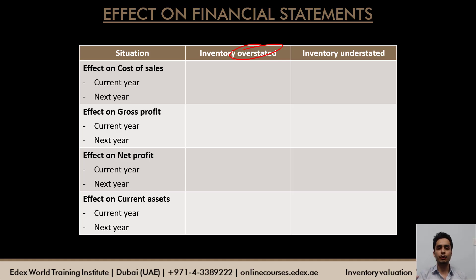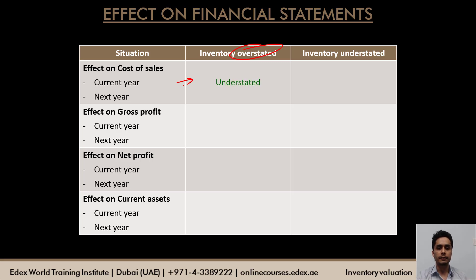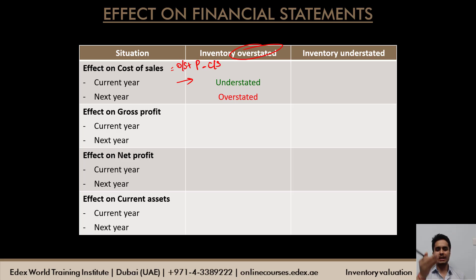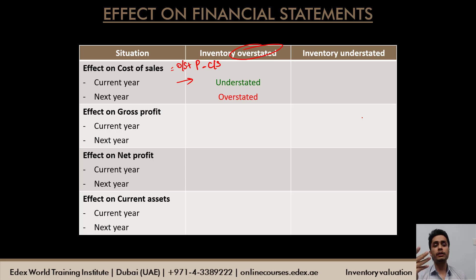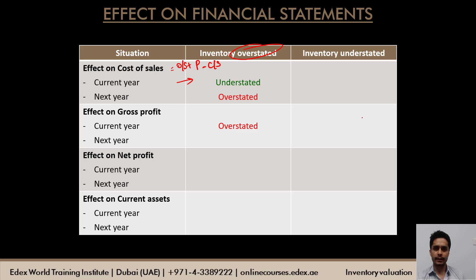First situation: inventory is overstated — stated at a higher value. To calculate cost of sales, you deduct closing inventory. So when closing inventory is overstated, cost of sales will be understated in the current year. Next year's cost of sales will be overstated because this closing inventory becomes the opening inventory. When opening inventory is overstated, cost of sales is overstated. Cost of sales is: opening stock plus purchases minus closing stock. If cost of sales is understated in the current year, gross profit will be overstated; next year's gross profit will be understated. Net profit follows the same pattern.